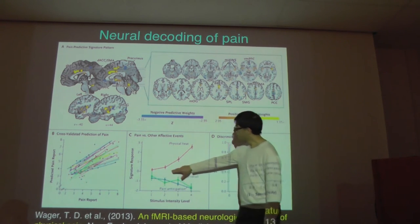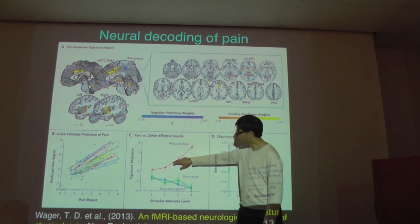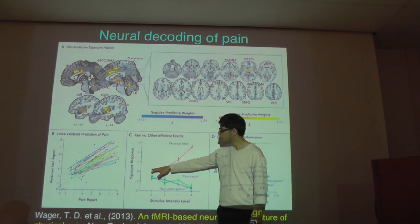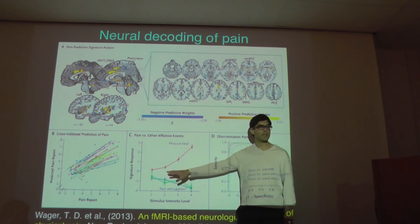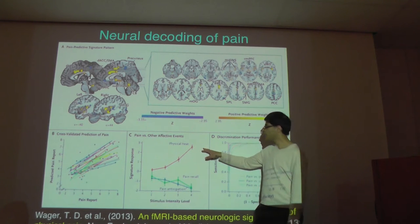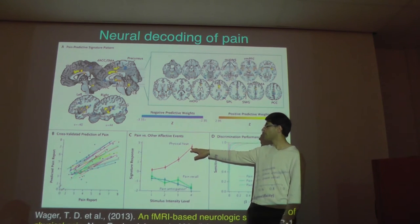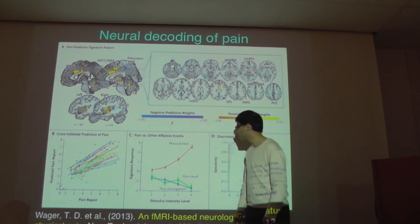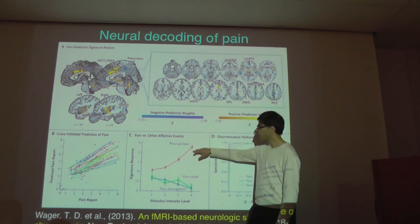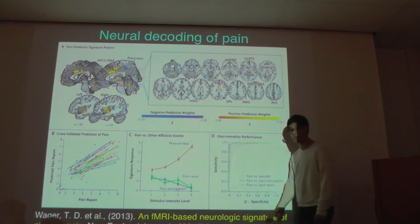This red line is their response to physical heat. As the heat gets hotter — from around 40 degrees C, which feels warm but is no big deal, up to around 50 degrees C, which really hurts — the classifier's prediction goes up and up, saying they should be experiencing more and more pain. So that's good.